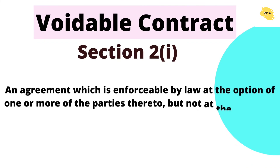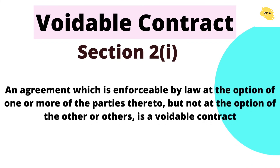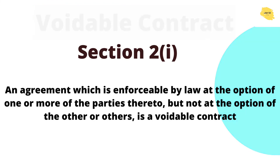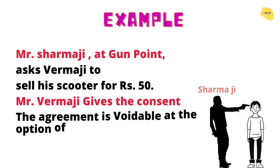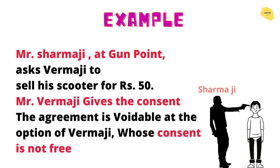Now we come to the voidable contract, Section 2(i). An agreement which is enforceable by law at the option of one or more of the parties thereto, but not at the option of the other or others, is a voidable contract. For example: Sharmaji is held at gunpoint by Varmaji and forced to sell his scooter. Because the consent was not free, this is a voidable contract — voidable at the option of one of the parties.